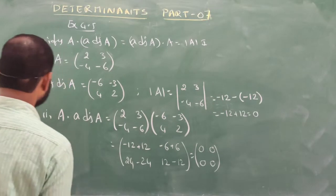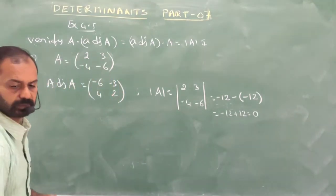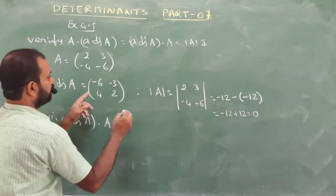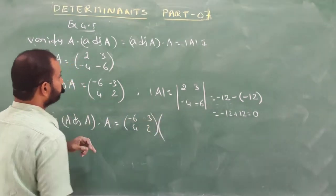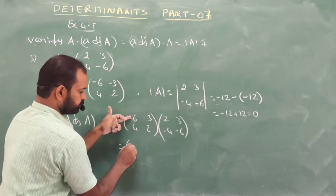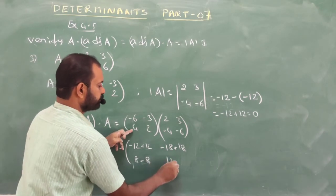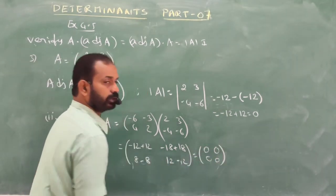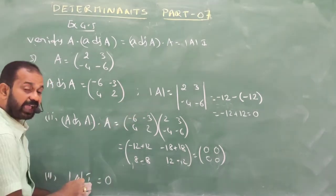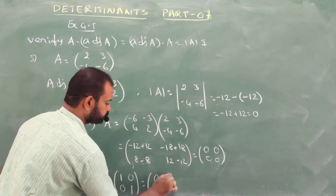Computing adjoint A × A: [-6, -3; 4, 2] × [2, 3; -4, -6] = [-12+12, -18+18; 8-8, 12-12] = [0, 0; 0, 0]. And |A| × I = 0 × I₂ = [0, 0; 0, 0]. All three are equal.